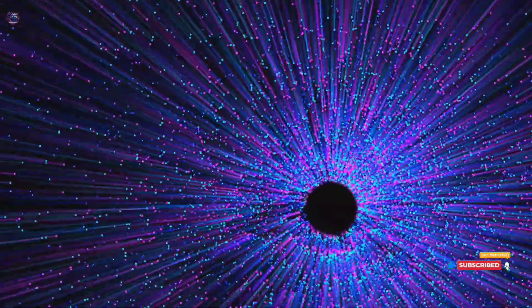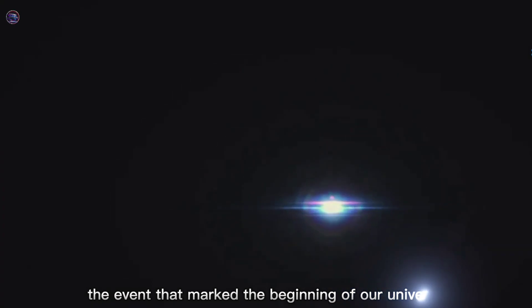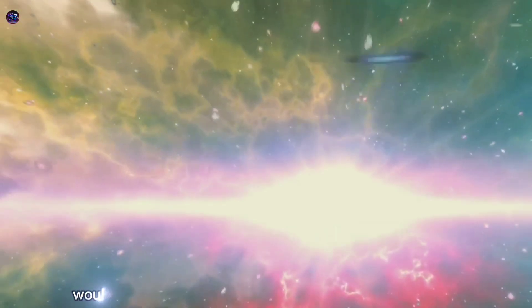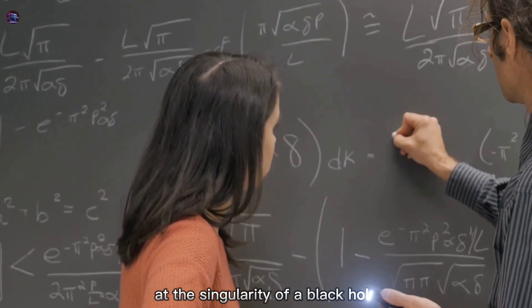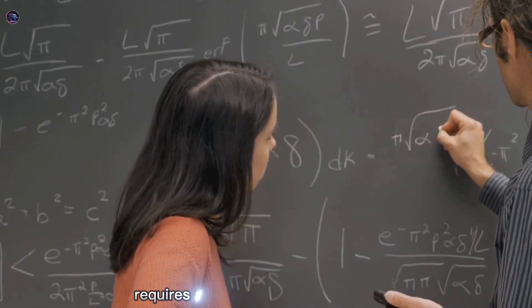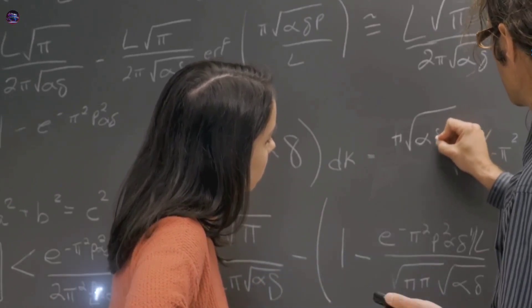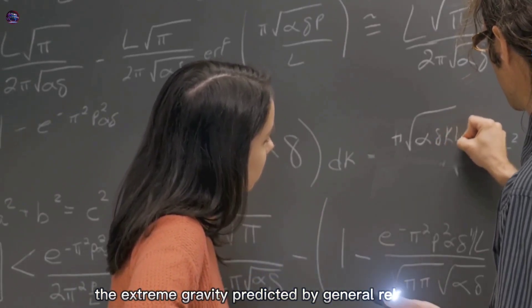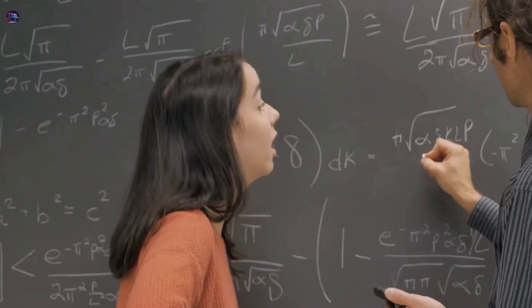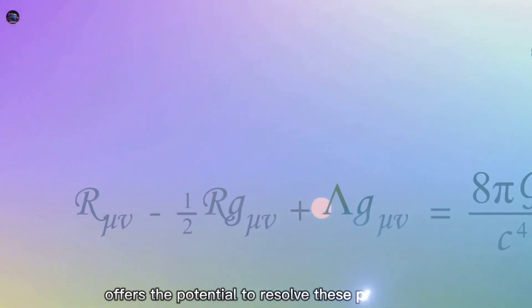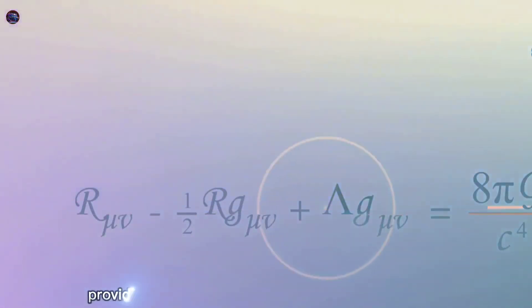Similarly, the Big Bang, the event that marked the beginning of our universe, involved conditions of extreme density and temperature where quantum effects of gravity would have been dominant. Understanding what happens at the singularity of a black hole and in the moments after the Big Bang requires a theory that can handle both the extreme gravity predicted by general relativity and the probabilistic nature of quantum mechanics. Quantum gravity offers the potential to resolve these paradoxes, providing insights into the nature of space and time themselves.